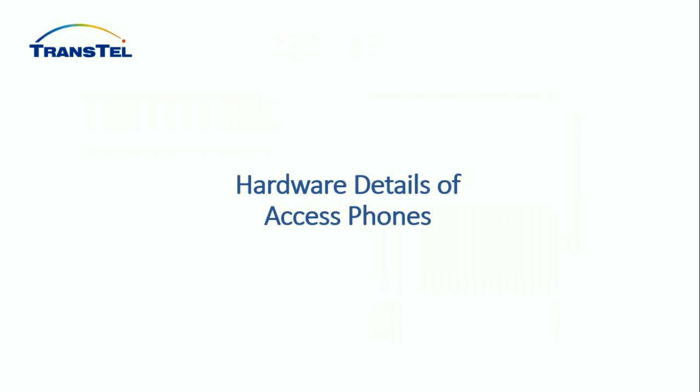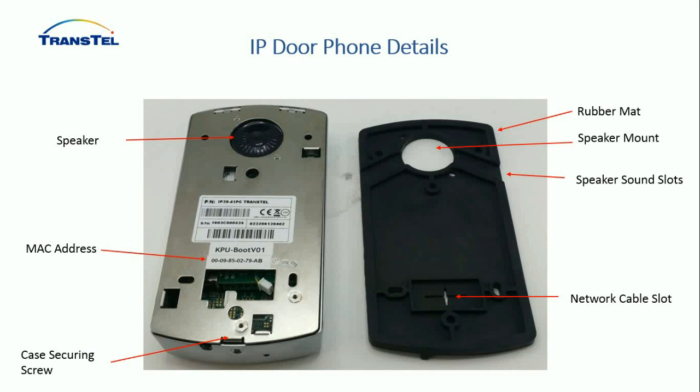Looking at the hardware in more detail: the phone and rubber unit seal everything together. Looking at where the rubber meets the phone mount, there is a hole at the top where the speaker has gone through, with two channels facing downwards to ensure water cannot travel up towards the speaker. That back part mounts against the wall, which is why a flat, even surface is preferred. There are holes for screws and a network cable slot.